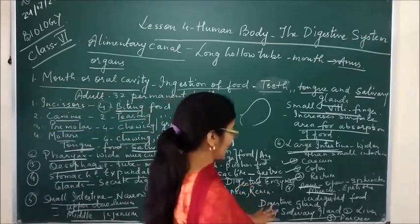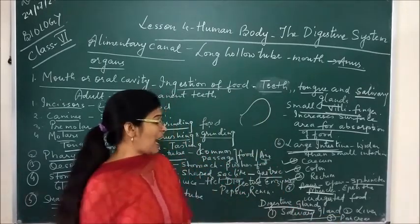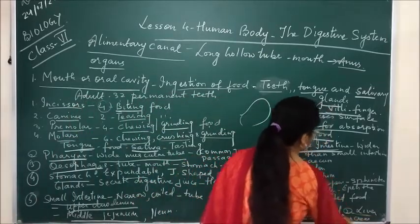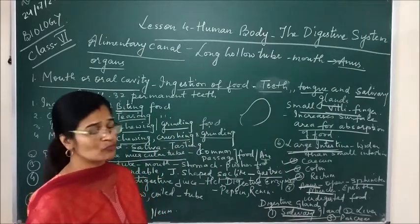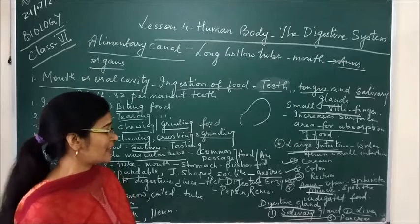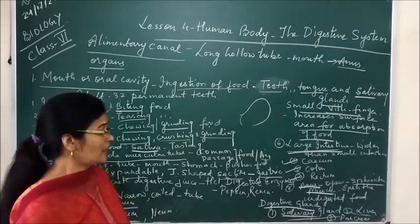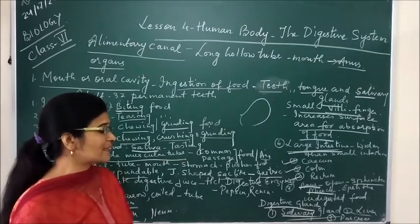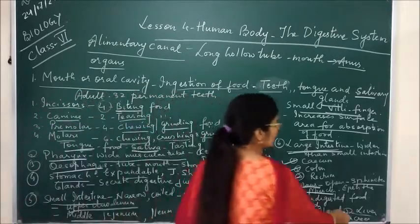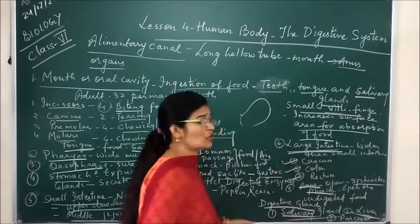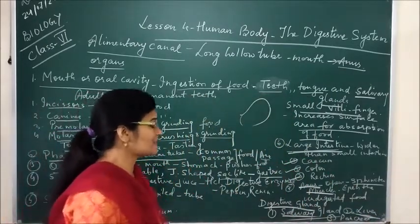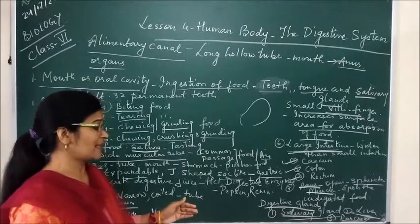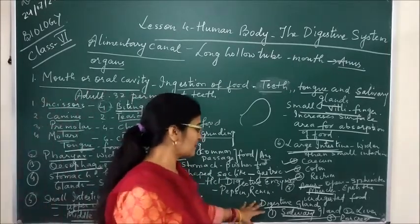Some digestive glands are also present which help in the digestion of food. These digestive glands are mainly of three types: salivary glands, liver and pancreas. Salivary glands are present in the mouth and contain saliva, which helps in digestion and makes food semi-solid so it can be easily digested. The liver mainly secretes bile juice, which also helps in the digestion of food. The pancreas contains pancreatic juice, which also helps in the digestion of food. These are the three glands found in the alimentary canal.